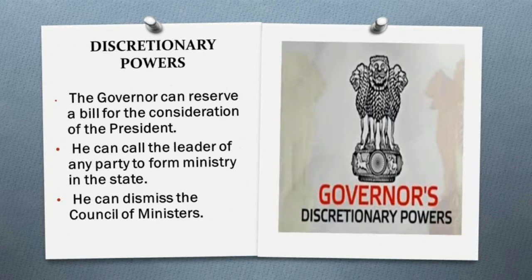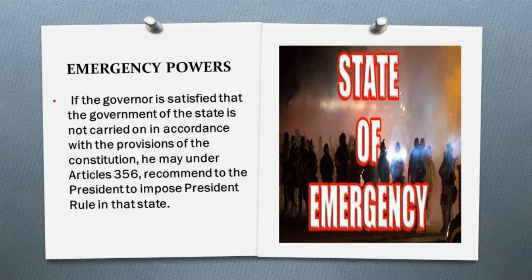Discretionary powers: the governor can reserve a bill for the consideration of the president, call the leader of any party to form ministry, and dismiss the council of ministers when it is unable to prove the confidence of the legislative assembly. Emergency powers: under Article 356, if the governor is satisfied that the government of the state is not carried on in accordance with the constitution, he may recommend to the president to impose President's rule. Once imposed, the state is administered by the governor as representative of the president.